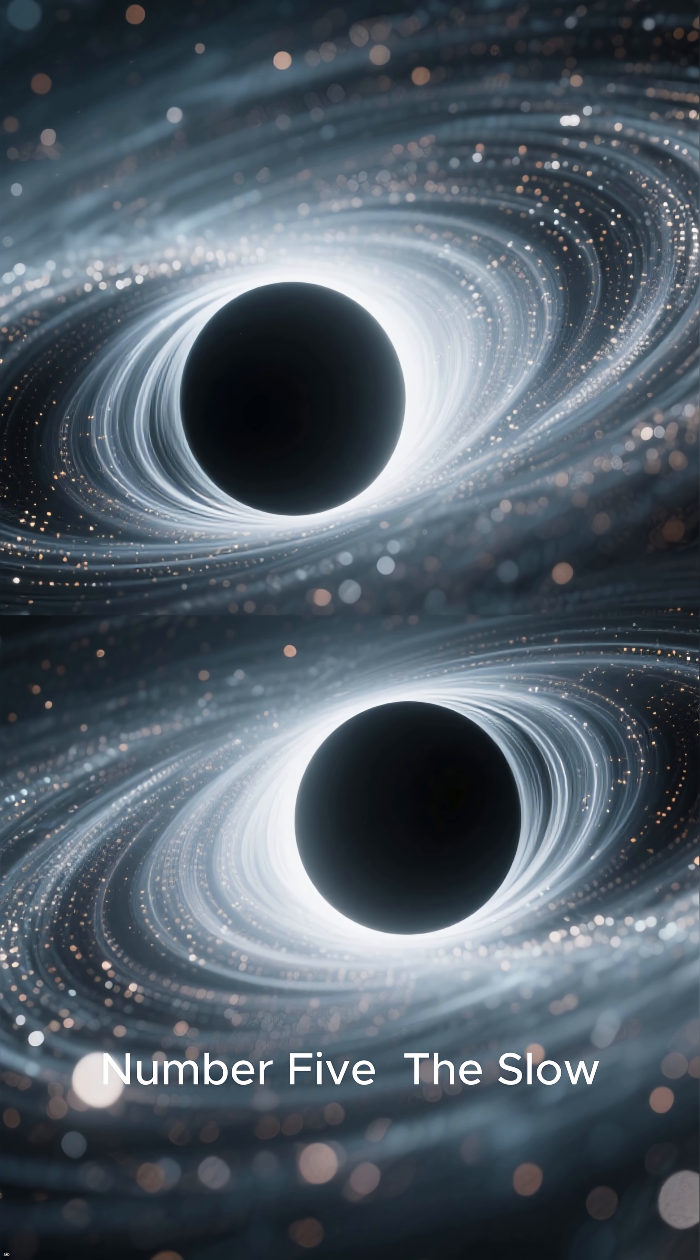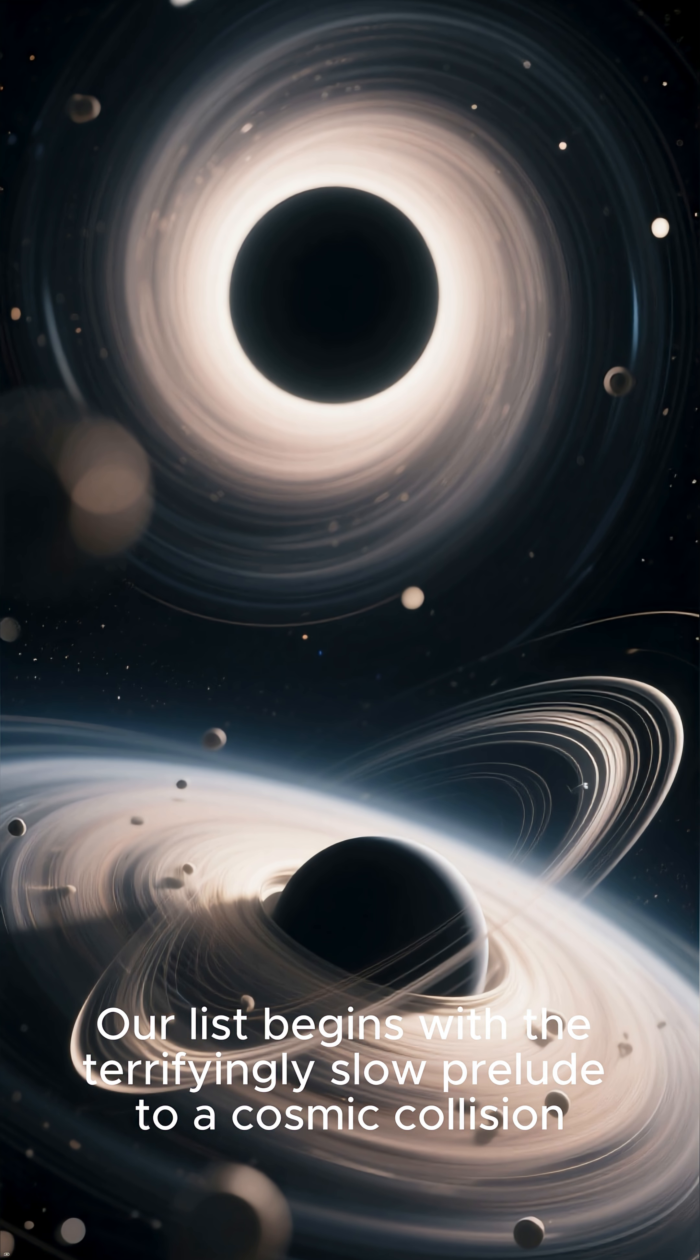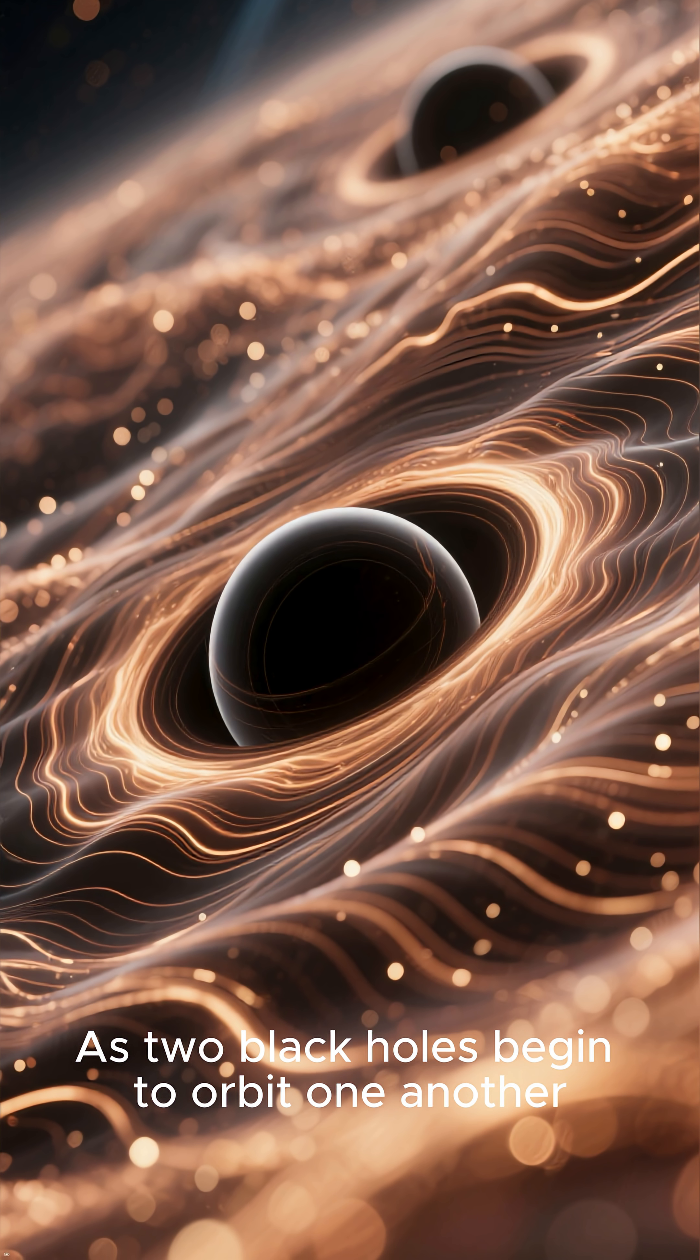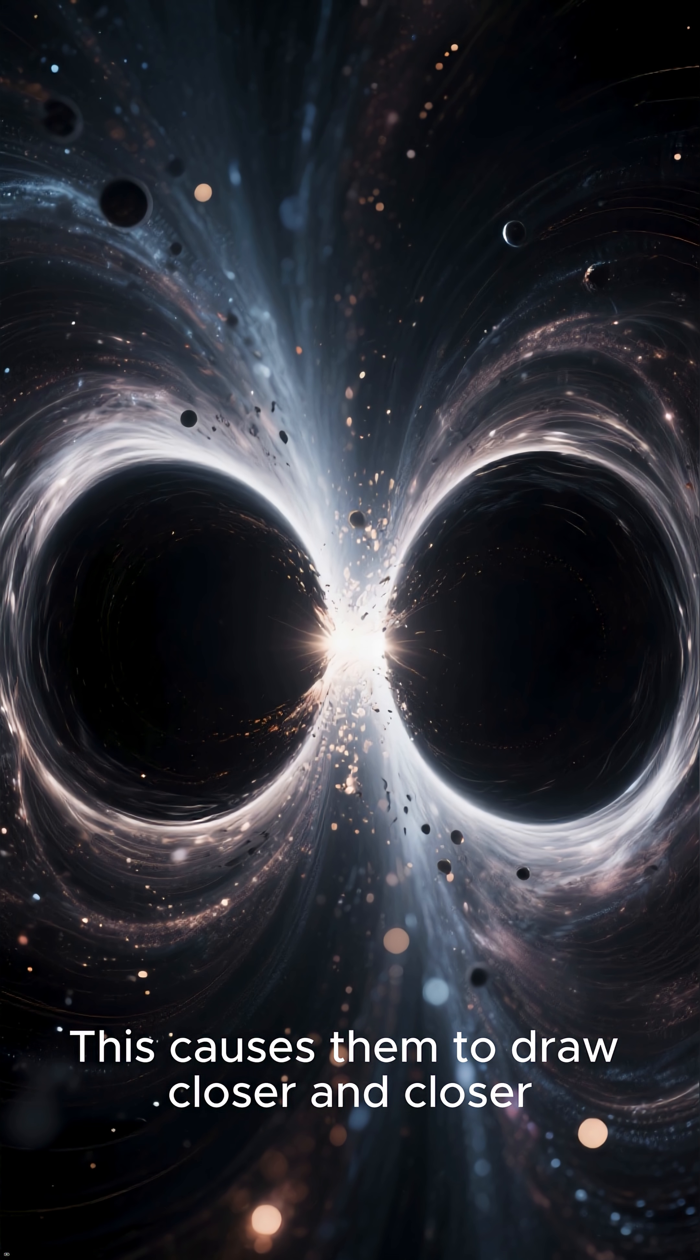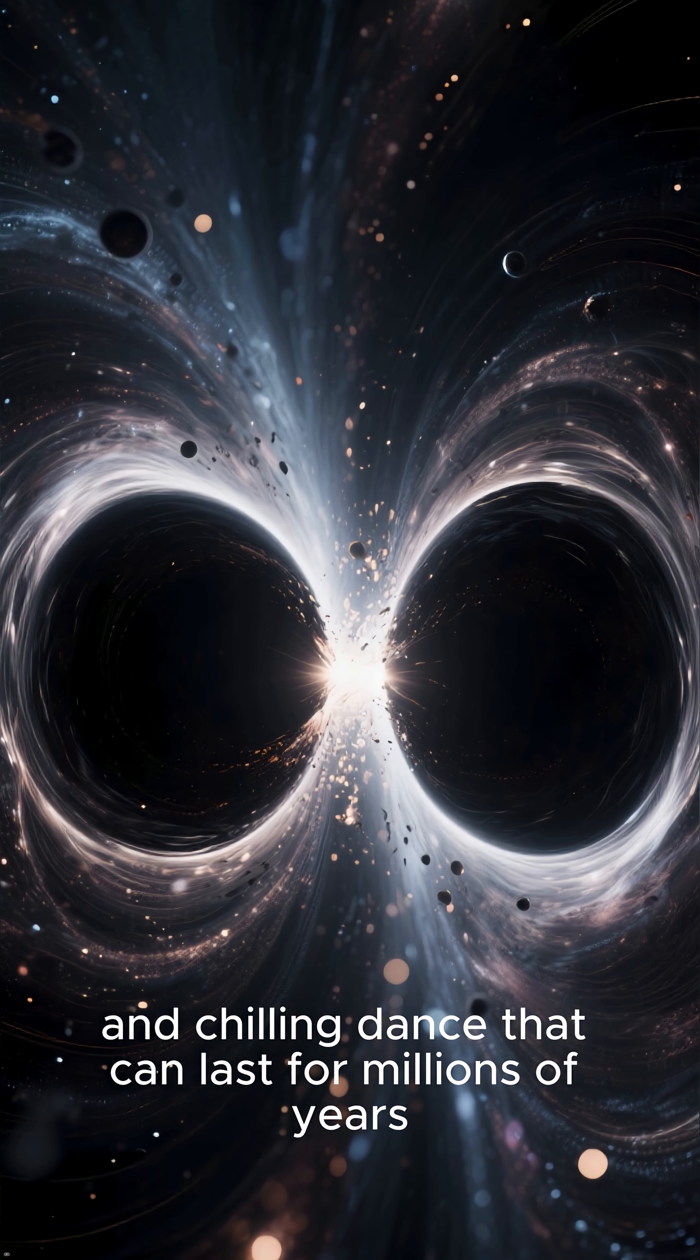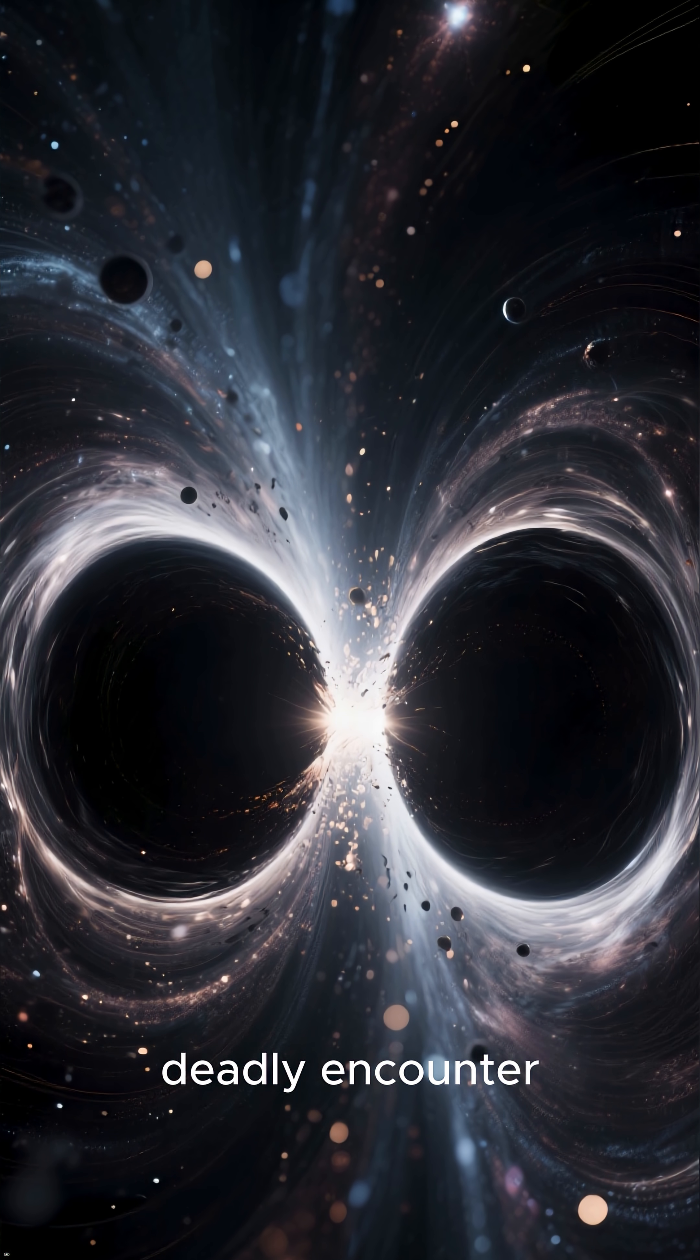Number 5. The Slow, Creeping In Spiral. Our list begins with the terrifyingly slow prelude to a cosmic collision. As two black holes begin to orbit one another, they gradually lose energy by emitting ripples in space-time. This causes them to draw closer and closer, a slow, mesmerizing, and chilling dance that can last for millions of years as they prepare for their final, deadly encounter.